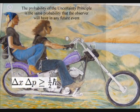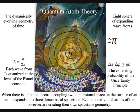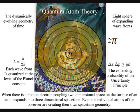The uncertainty principle of quantum physics is the same probability that the observer will have with any future event.